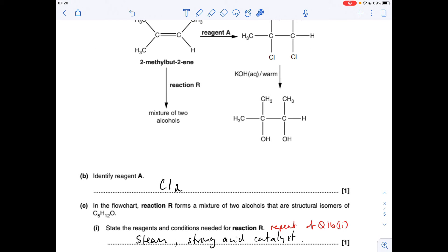C-I, well, we've already seen this question. State the reagents and conditions for reaction R. So reaction R is the reaction of an alkene to form a mixture of two alcohols. So that's your steam, or your H2O gaseous, or your greater than 100 degrees C temperature, strong acid catalyst, sulfuric or phosphoric acid.